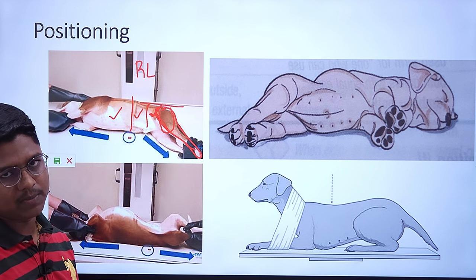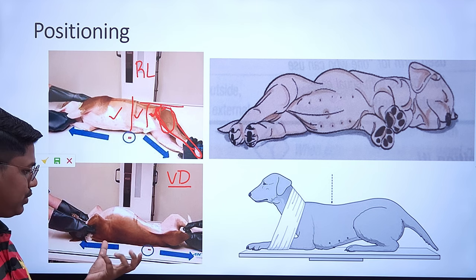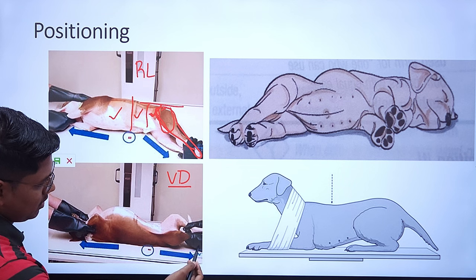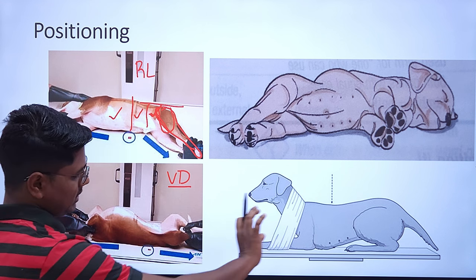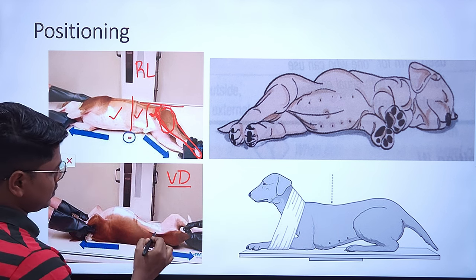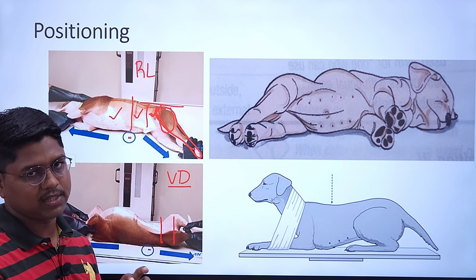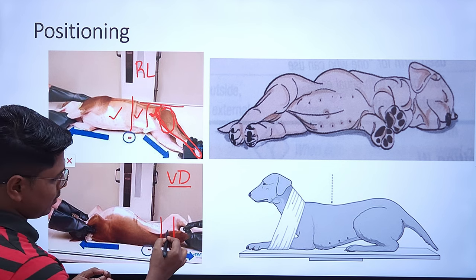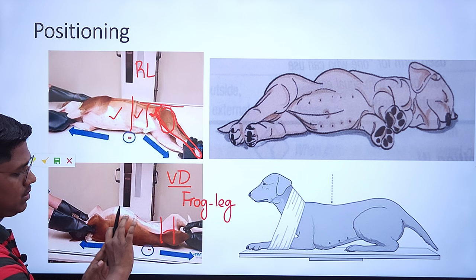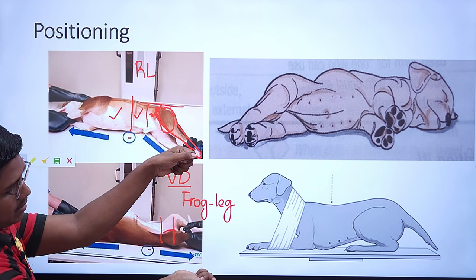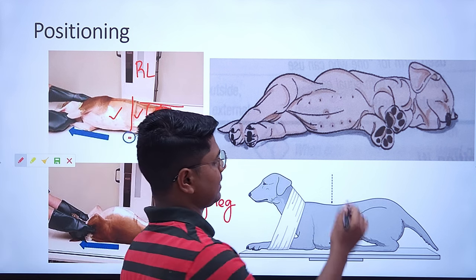For the ventrodorsal abdominal radiograph, similarly do not pull the pelvic limb caudally very harshly, or the serosal detail of the caudal abdomen will be lost and you cannot identify the organs there. This positioning is known as frog-leg positioning — simply widen the limb and expose the abdomen; don't pull it hard toward caudal. The dorsoventral view is usually not taken for abdominal radiographs.